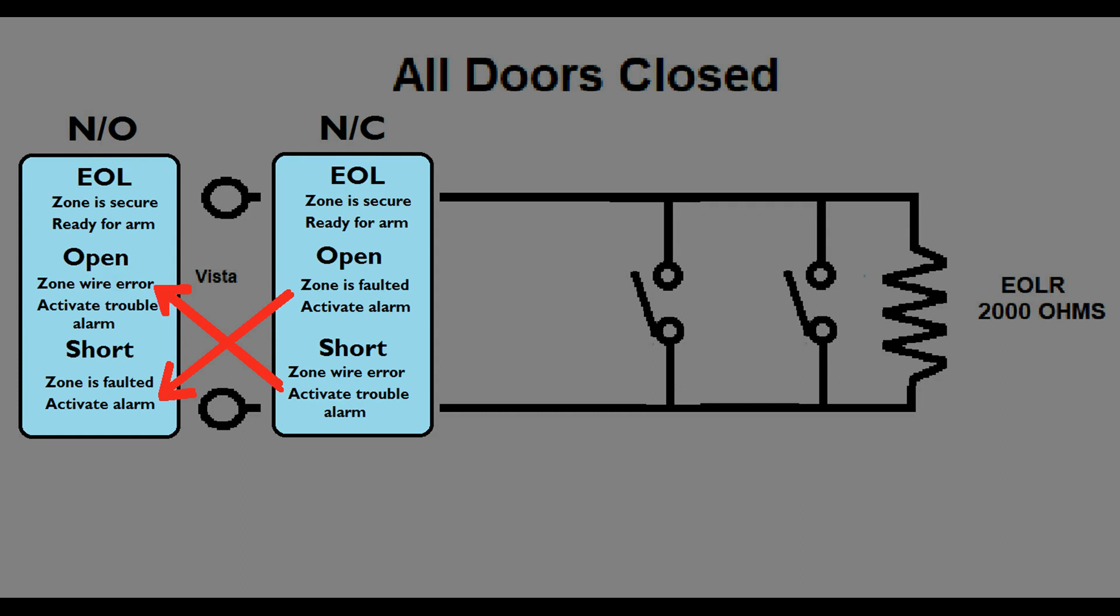Here's the difference in how they respond. With a normally closed sensor, an open activated your alarm system. With the normally open sensor, a short will activate your alarm. And likewise, on normally closed sensors, a short is a problem with the wiring. Normally open sensors see an open as a problem with wiring. Let's look at some examples.